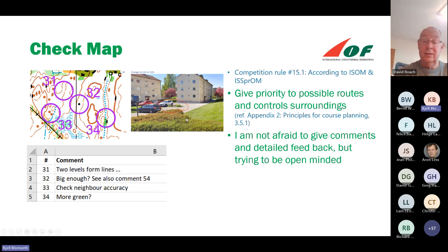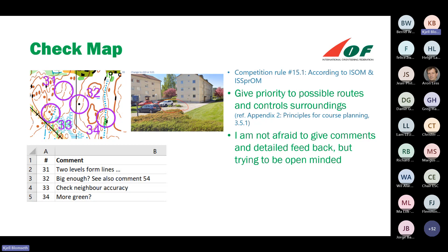For sprint competition maps — this example is from Buros — I used Google Street View for the first map check. I was back home in Norway and did a lot of checking with Google View, then I could go down after some months to see how the mapping had progressed. I think it's a good tip to communicate through one advisor, because there are often several course setters and more advisors involved, and the mapper will receive many different comments. It's easier for the mapper to receive feedback through just one channel.